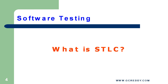What is STLC? The process of testing software in a well-planned and systematic way is known as Software Testing Life Cycle, STLC. Different organizations have different phases in STLC; however, Generic Software Test Life Cycle consists of the following phases.